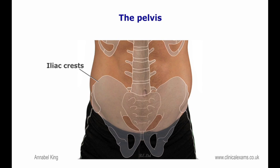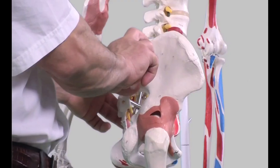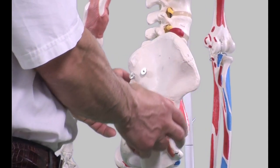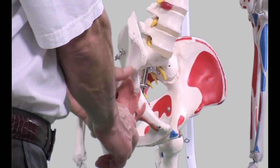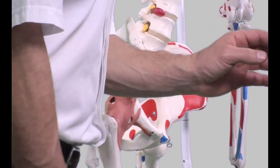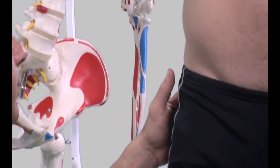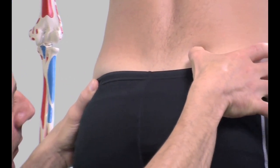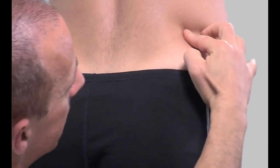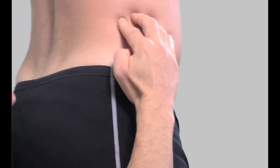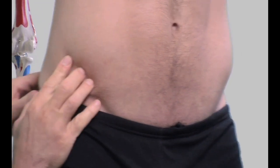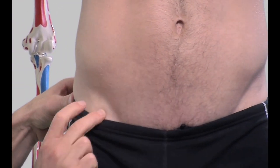The lower limbs. The iliac crests. The crest of the ilium, or iliac crests, is the superior border of the wing of the ilium and the superolateral margin of the greater pelvis. The iliac crests may be palpated starting posteriorly from the posterior superior iliac spine, then progressing superiorly and anteriorly until the anterior superior iliac spine is felt.